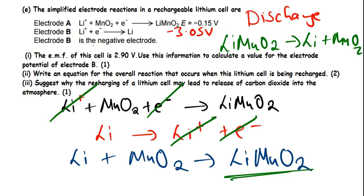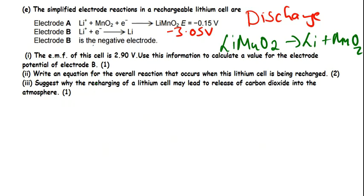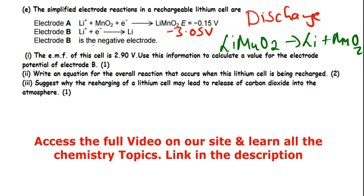Then suggest why the recharging of the lithium cell may lead to release of carbon dioxide into the atmosphere. When it comes to recharging, electricity for recharging the cell may come from power stations. Those power stations may do some burning of fuel. That's the basic simple answer - recharging may be done using electricity.